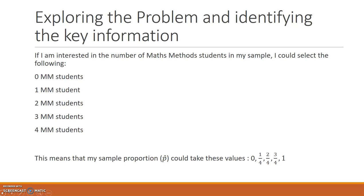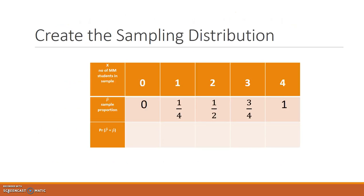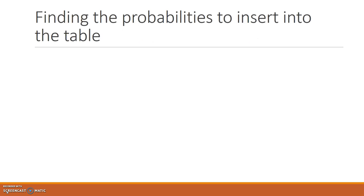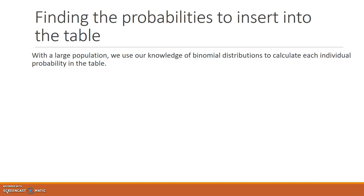Let's create the sampling distribution. This is what it would look like — you can see all the values for the sample proportion P-hat in the top row. I've put X, the number of Maths Methods students in our sample, in a second row. Now let's find the probabilities to insert into the table.